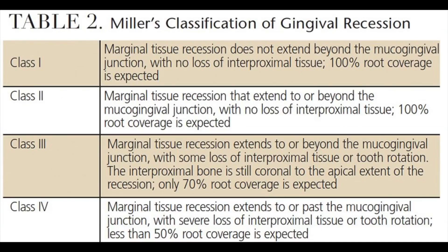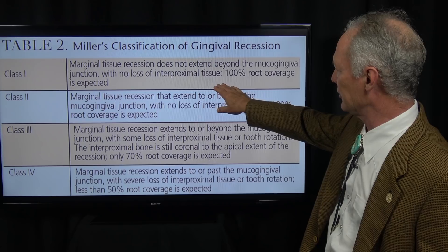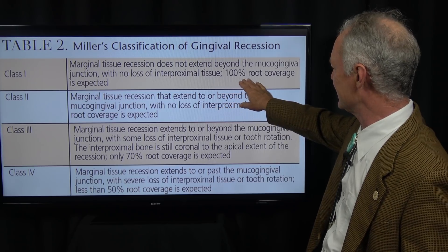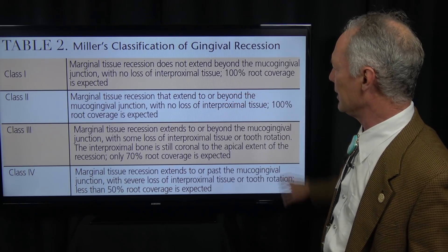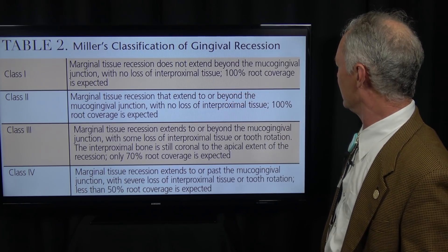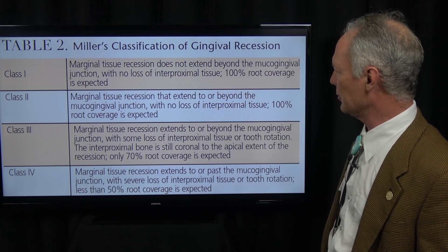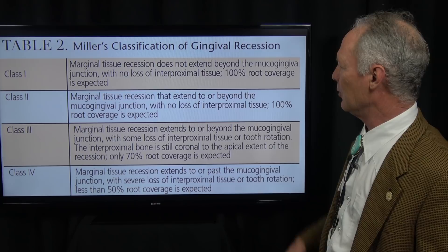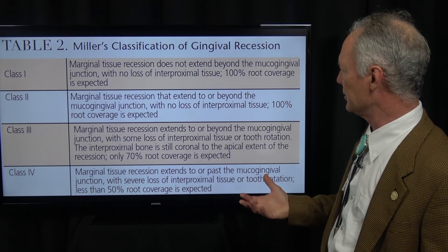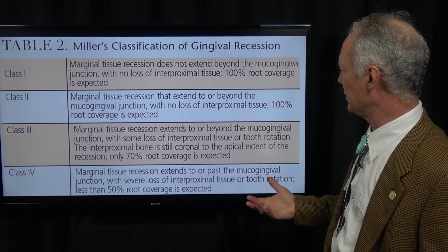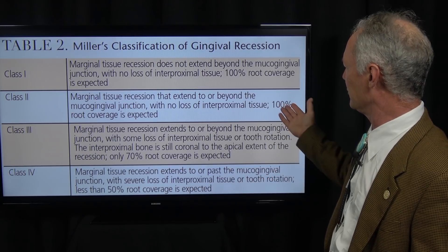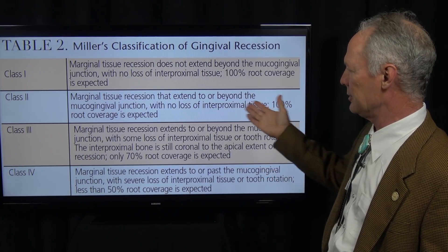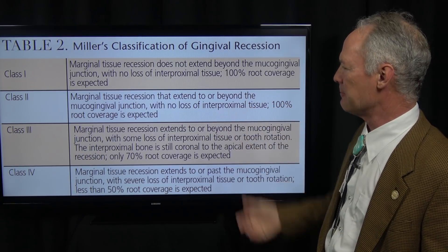With Miller's system, Class 1 gingival recession is when marginal tissue recession does not extend beyond the mucogingival junction with no loss of interproximal tissue. One hundred percent root coverage is expected.